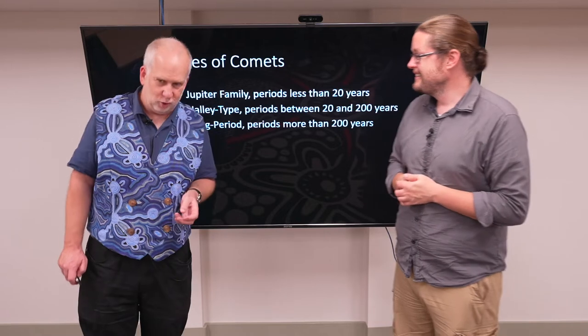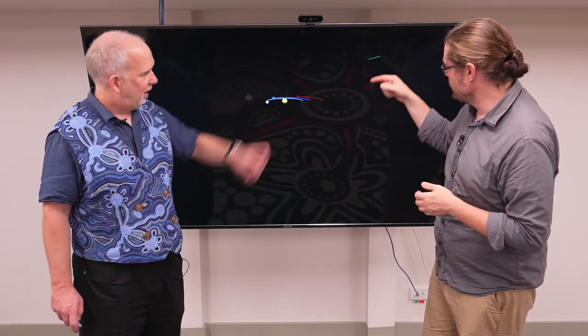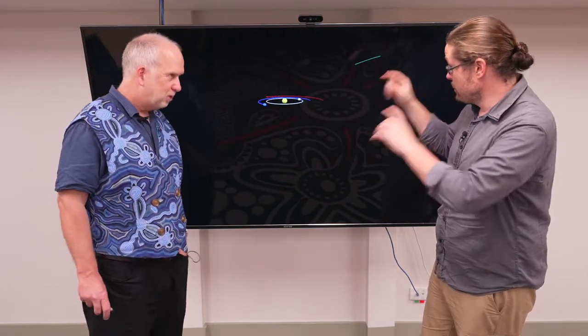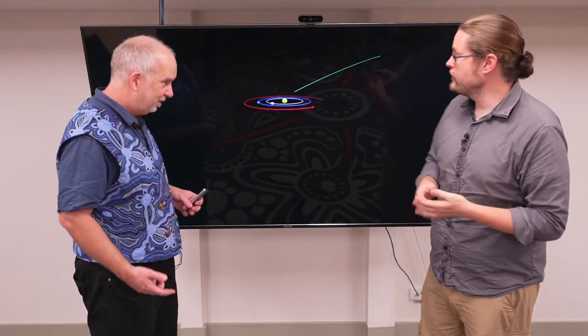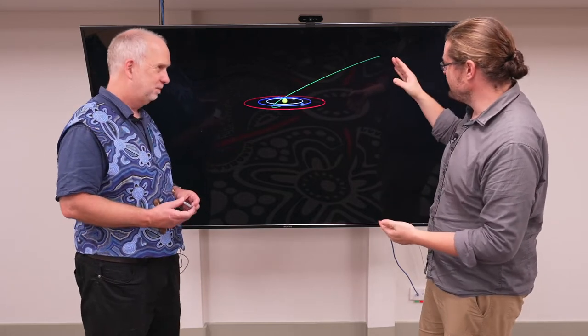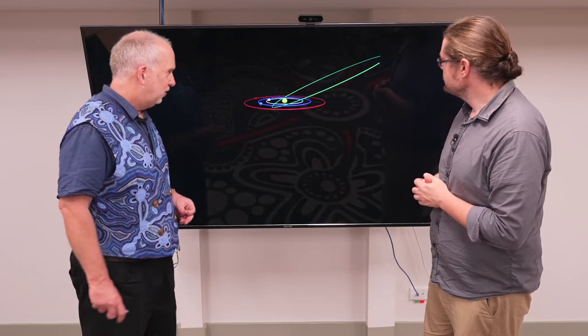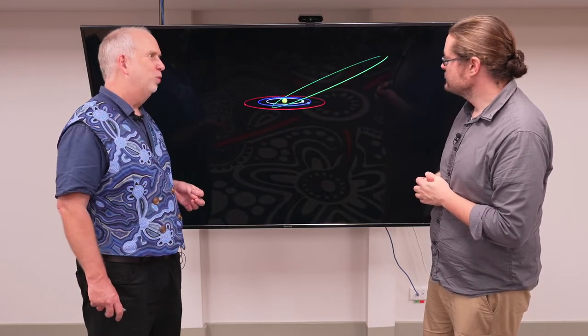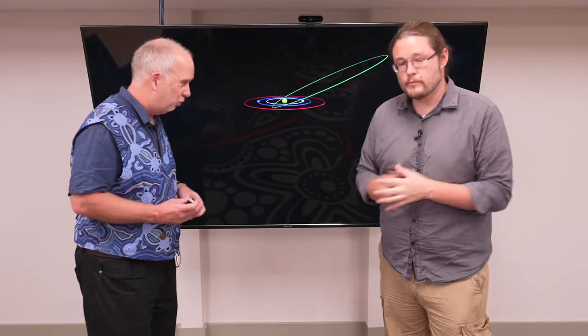So let's start off with the Jupiter family comets. Here's an orbit, so I've got the Sun, Venus, Earth and Mars, and we'll put them in orbit around the Sun. And this is the comet, a typical Jupiter family comet. They're called Jupiter family because their orbits typically take them out to about where Jupiter is. So it does kind of start relatively close in comparison to the inner planets. If it went further out, it would take longer.